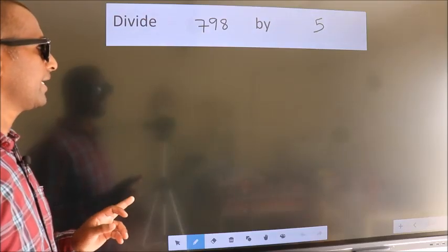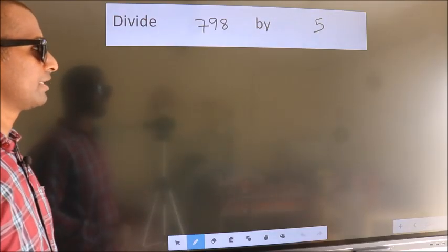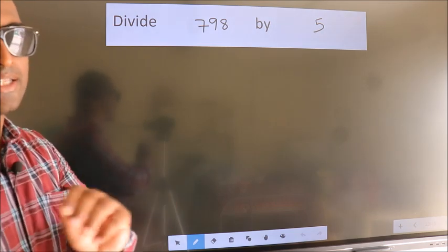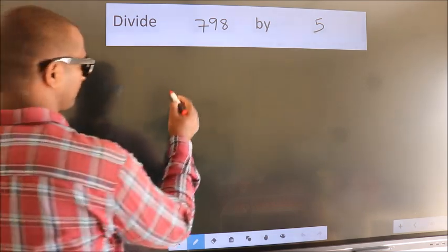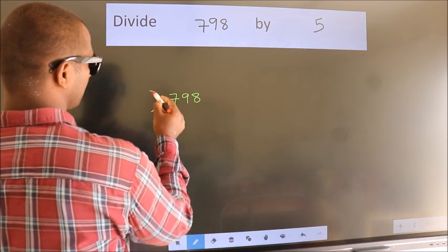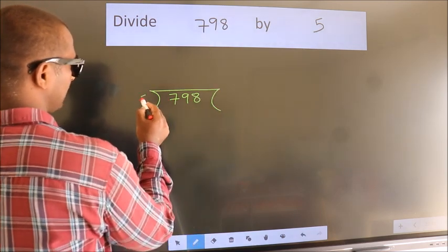Divide 798 by 5. To do this division, we should frame it in this way: 798 here, 5 here.